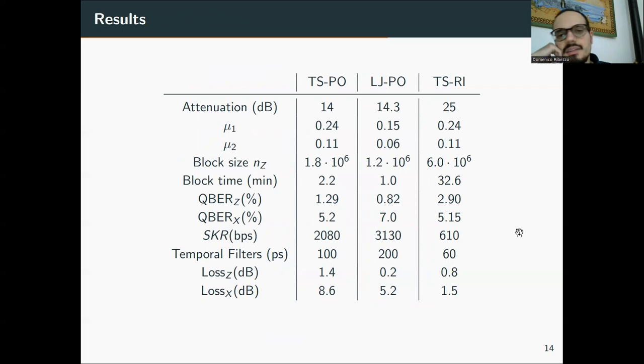We can see that the Trieste-Postojna and Ljubljana-Postojna link showed similar attenuation of 14 dB, but the Trieste-Rijeka link had a much larger attenuation, 25 dB. Then the mu are the number of photon per pulse, for the decoy signal, and they have been stated according to a simulation model in order to maximize the key rate. We see that the Trieste-Postojna and Trieste-Rijeka has the same mu because that is a compromise, since in Trieste there was just one transmitter so it couldn't be different. The block size is around 10 to the 6, for Trieste-Rijeka it's a bit more, 6 times 10 to the 6, and the acquisition time of one block size is one or two minutes in the short links and half an hour for the link with more attenuation.